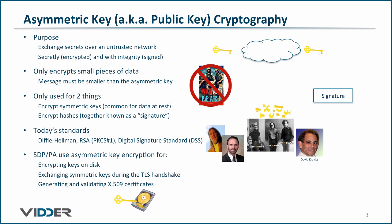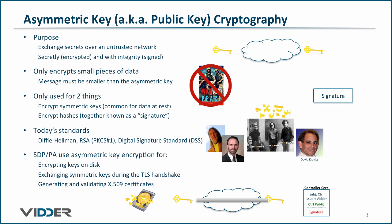The software-defined perimeter and precision access use asymmetric key encryption for encrypting symmetric keys before storing them on disk, for exchanging symmetric keys during the mutual TLS handshake, and for generating and validating X.509 certificates. With the first two encryption methods, we have been able to encrypt bulk data using symmetric key encryption and transport the secret keys over an untrusted network using asymmetric key encryption.